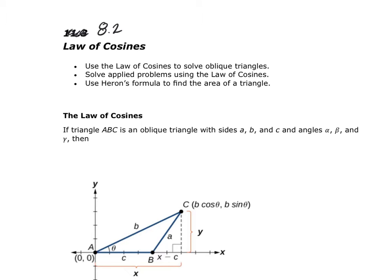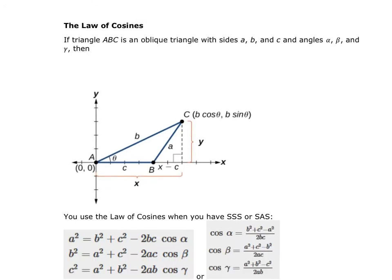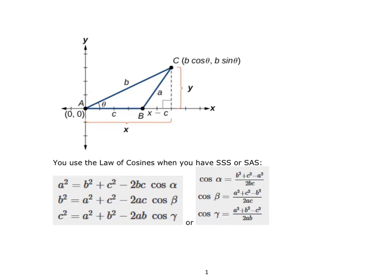We're going to be looking at solving triangles in which I have possibly three sides, or I have two sides and the angle not opposite one of the sides. So in this case I have B and C and then alpha, or I have A and C and then beta. Notice when using the Law of Cosines I have all three sides, or I have side-angle-side — the angle between the two sides but not opposite one of them.